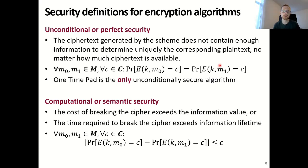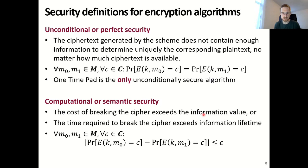In practice, we cannot use unconditionally secure algorithms like the one-time pad, so we have to resort to a weaker definition of security: computational or semantic security. In this case, the cost of breaking the cipher exceeds the value of the information — in other words, the time required to break the cipher exceeds the information's lifetime. For example, if it takes 1000 years to break the cipher, the encrypted information is probably worthless by then, so it is computationally secure. We can also mathematically define this: similar to unconditional security, but instead of the probabilities being equal, we say the difference between them is very small — less than or equal to some small value epsilon.